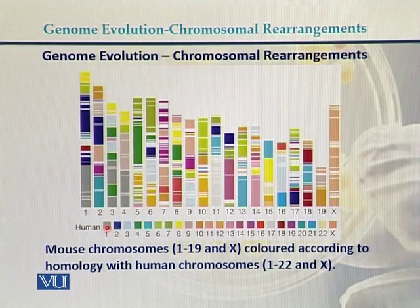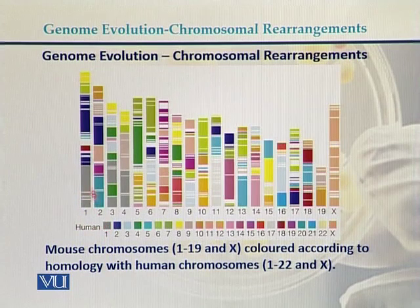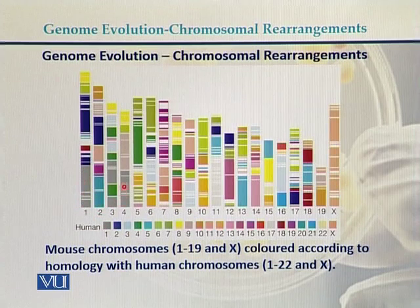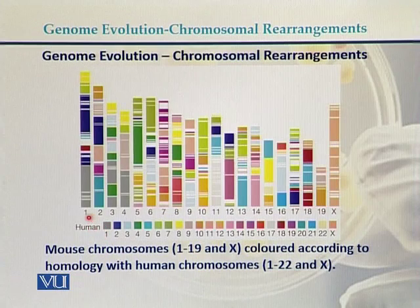This color represents chromosome number 1 of humans. We can see that this color matches with mouse chromosome 1, then with chromosome 3 and with chromosome 4. So human chromosome 1 has homology with mouse chromosomes 1, 3, and 4.